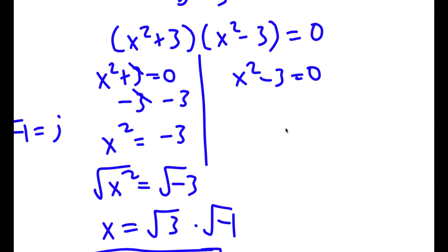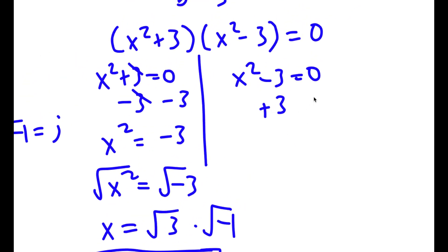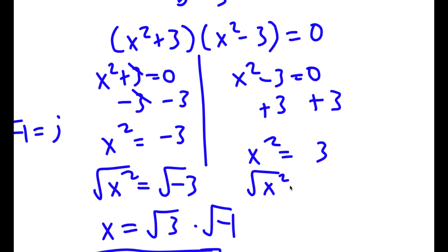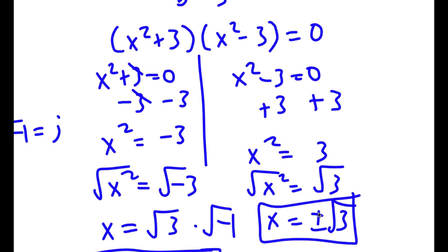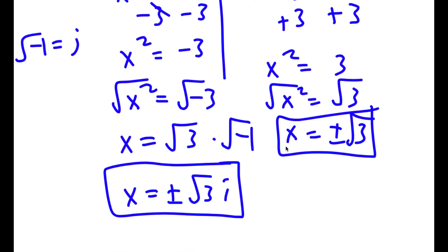For x squared minus 3 equals 0: adding 3 to both sides gives x squared equals 3. Taking the square root gives x equals plus or minus the square root of 3. So altogether, the four solutions to this problem are x equals plus or minus the square root of 3i and x equals plus or minus the square root of 3.